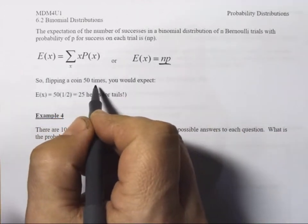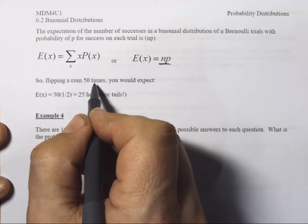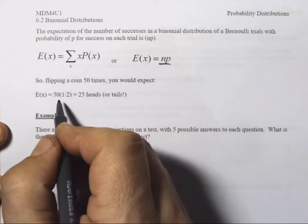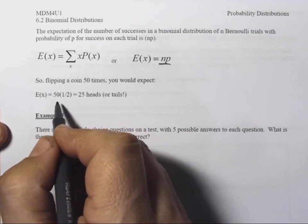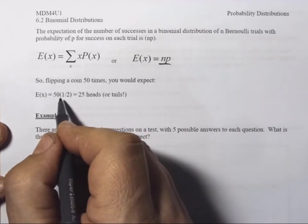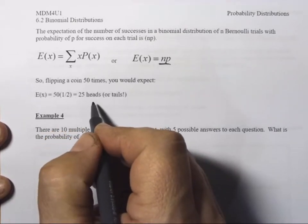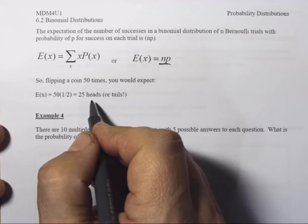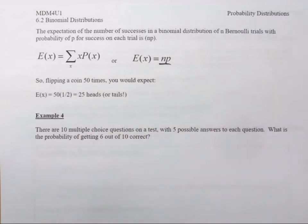So, flipping a coin 50 times. If you're flipping a coin 50 times, and that's n, you would expect that you'd get half as many heads or half as many tails. So, 50 times p, which is a half here, is 25 heads. That makes perfect sense. If I had 100 flips of a coin, I would expect I would get about 50 heads in 100 flips. Half as many.